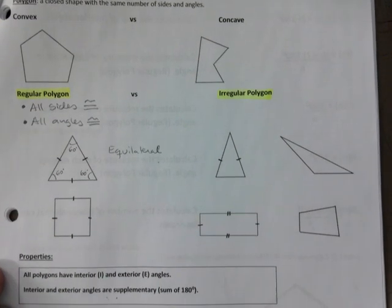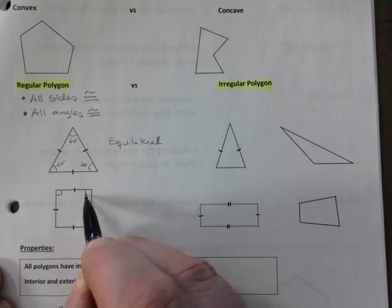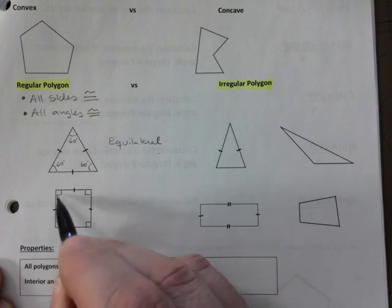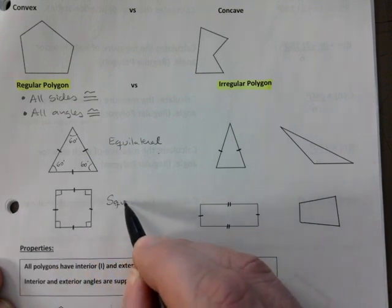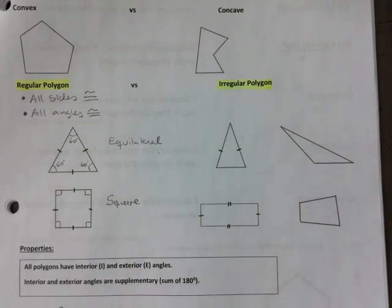Equilateral. That's a regular polygon. Now, a square, if it has all four sides measure the same and all angles are 90, we call that a square. But it would be under the regular polygon category.